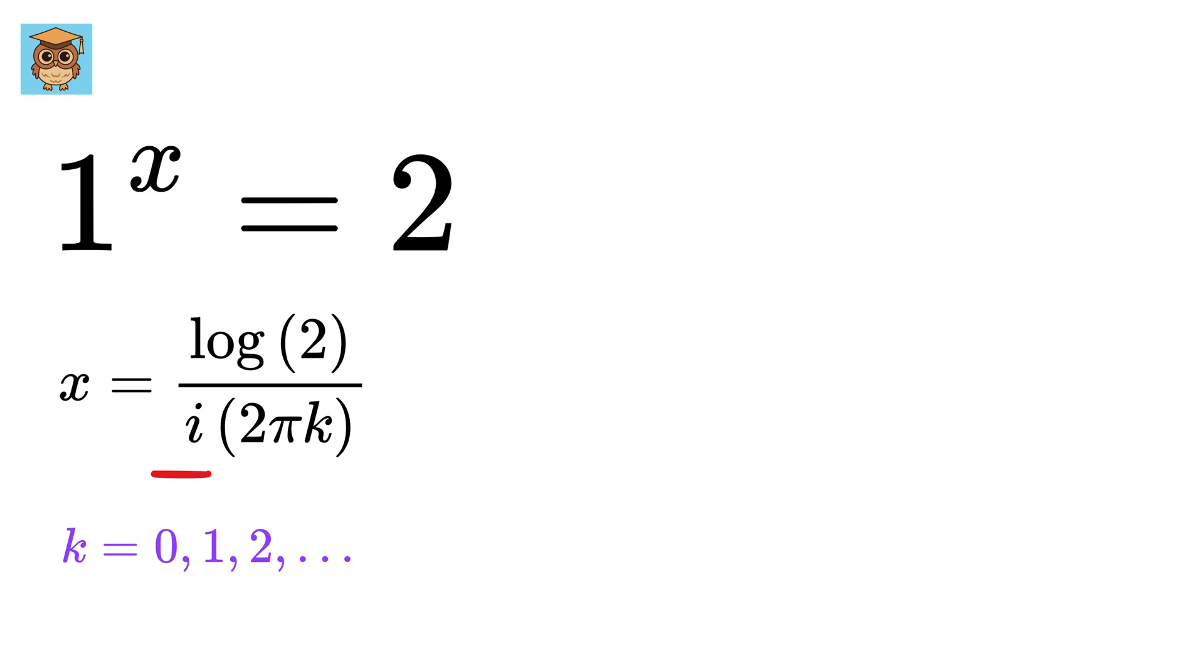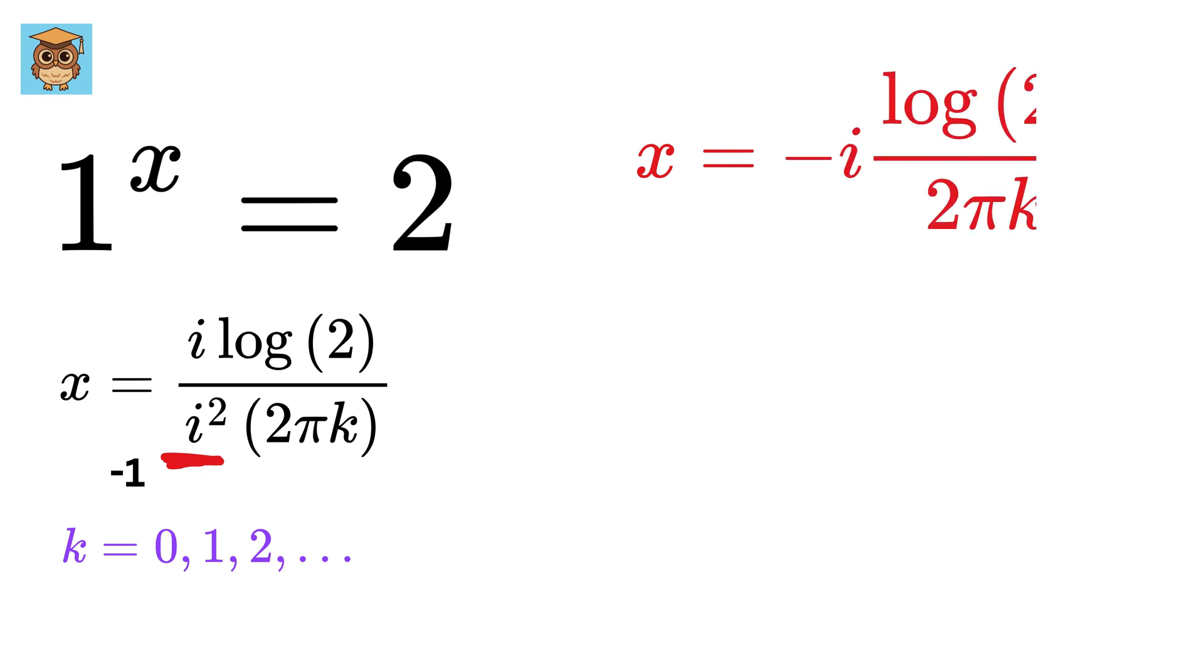Now I want this i to be on the top. So multiply and divide by i to get this. Now this becomes negative 1, and therefore x becomes minus i times log 2 upon 2k pi.